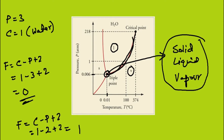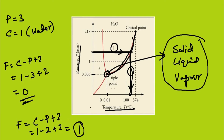In this region, if I want to fix a point on the graph, I either need to know the pressure — if I know the pressure, I can find the temperature — or if I know the temperature, I can find the pressure. So I need to know either temperature or pressure to define the state in this region. Hence, the degrees of freedom is 1.